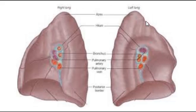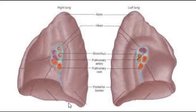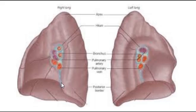Here again is the apex, the diaphragmatic surface of both lungs, and the mediastinal surface with the hilum — where the arteries, veins, and bronchus travel through to supply the lung. Coming down from the hilum, you'll see a ligament — the pulmonary ligament. If they ask you about it on an exam, it is the pulmonary ligament that comes down from the hilum.